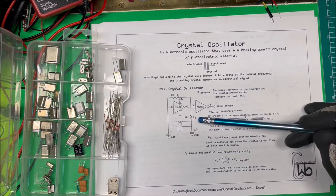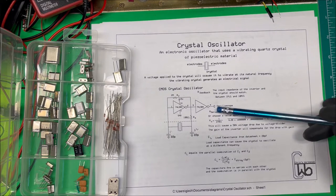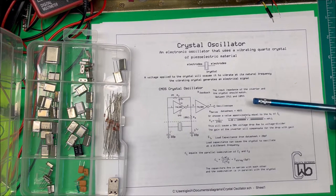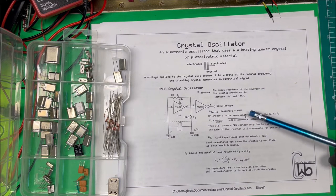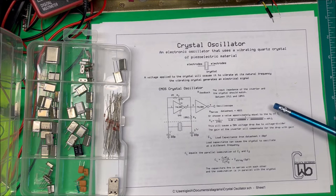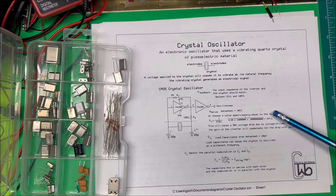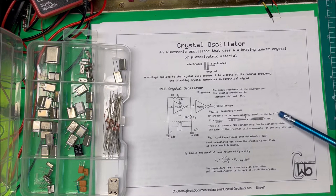Now the series resistor that's in the datasheet is going to be at least a minimum of 40 ohms. But if you don't know what that is or don't have the datasheet for it, you can get an approximate value that's equal to the capacitive reactance of the load capacitance.